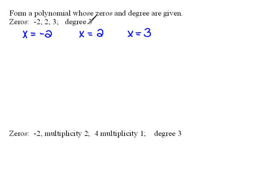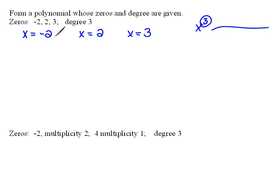They also say that this is a degree 3 polynomial, which means that if we looked at the equation itself, we would be looking at something that has x-cubed as the leading term. Whenever we see an x-cubed equation and solve it, we're going to have three answers. So these back each other up — if we have three answers, we should have a degree 3 polynomial.